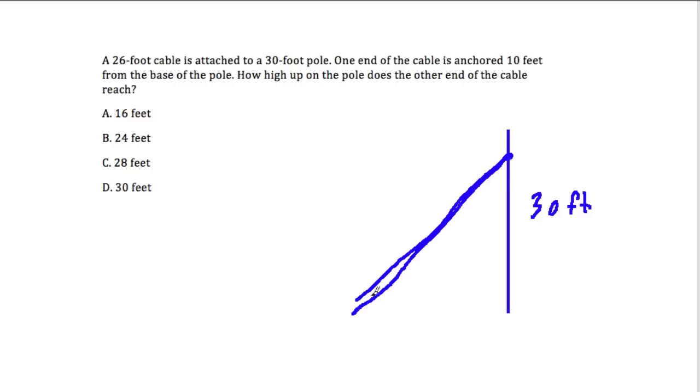And now if the cable is taut, let me redraw that. If it's a cable and it's placed into the ground, it'll be taut, it'll be a straight line. But it's not going to reach the top of the pole, and that makes sense because if it were to reach the top, it would have to be longer than 30 feet. But we know that it's 26 feet.